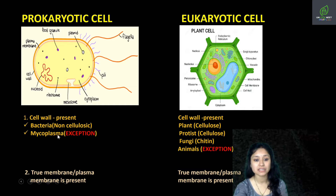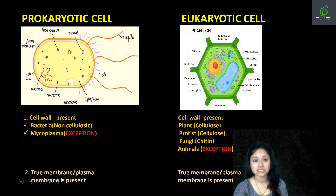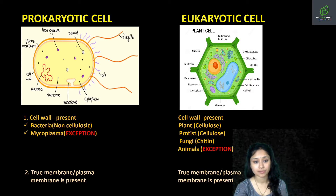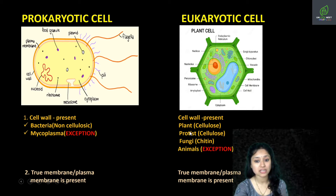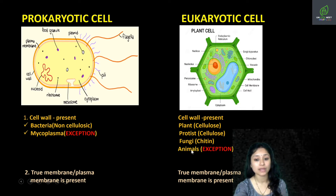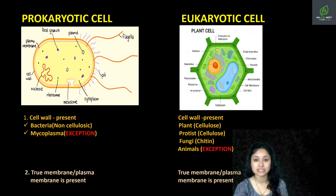We start from the outermost layer, that is the cell wall. In prokaryotic cells, the cell wall present in bacteria is non-cellulosic. While in case of eukaryotic cells, the cell wall present in plants is cellulosic. In protists it is again cellulosic. In fungi, the cell wall is composed of chitin. While in animals it is an exception — cell wall is absent.